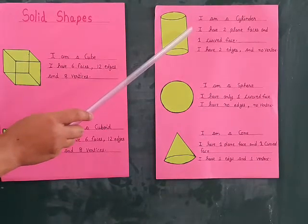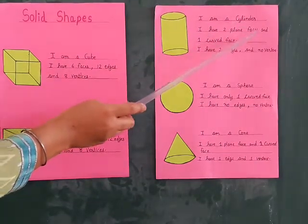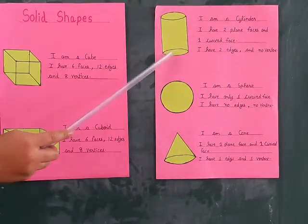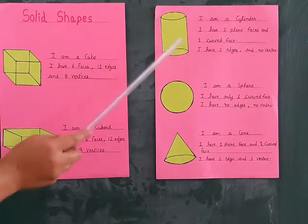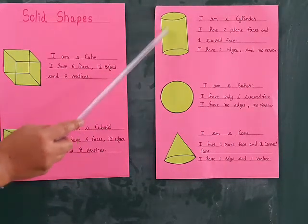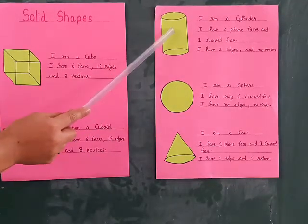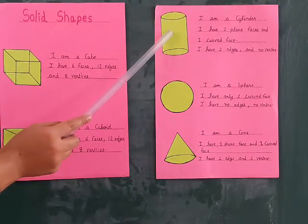Third is cylinder. I am a cylinder. I have 2 plain faces and 1 curved face. Cylinder has 2 plain faces and 1 curved face. This is a plain face and this one is curved face. This is 2 circles and 1 rectangle.